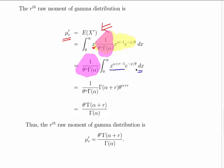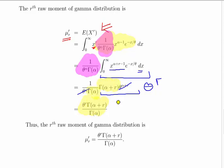Using the first variation of the Gamma function expression, we can express this as the Gamma function of alpha plus r times theta to the power of alpha plus r. Then simplifying: theta to the power of alpha divides out with theta to the power of alpha plus r. We can't simplify further because we don't know what r is in relation to alpha plus r. So that's the final result for the raw moments. The Gamma function alternatives helped out here — the first one in particular.